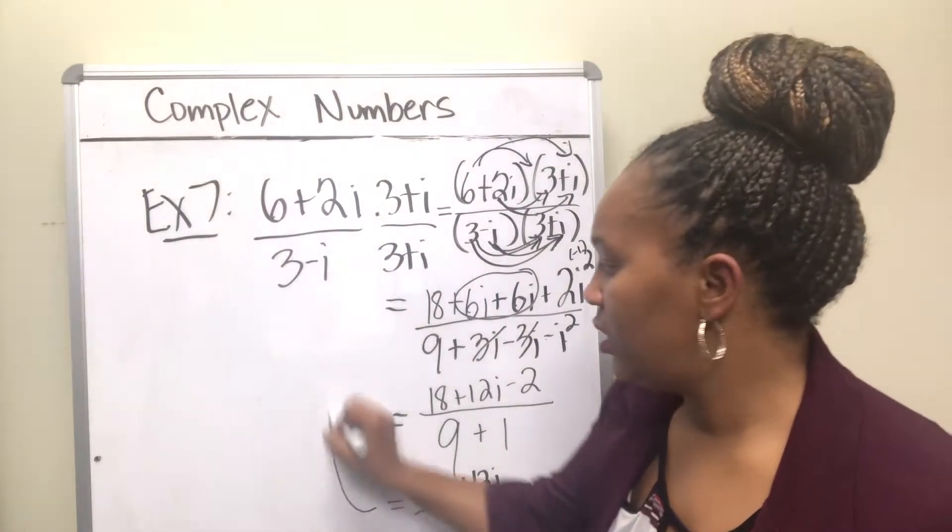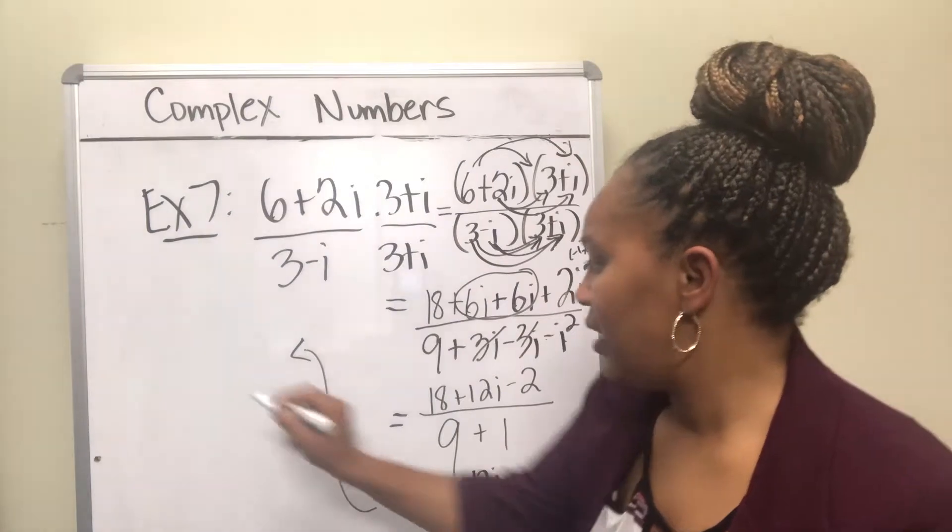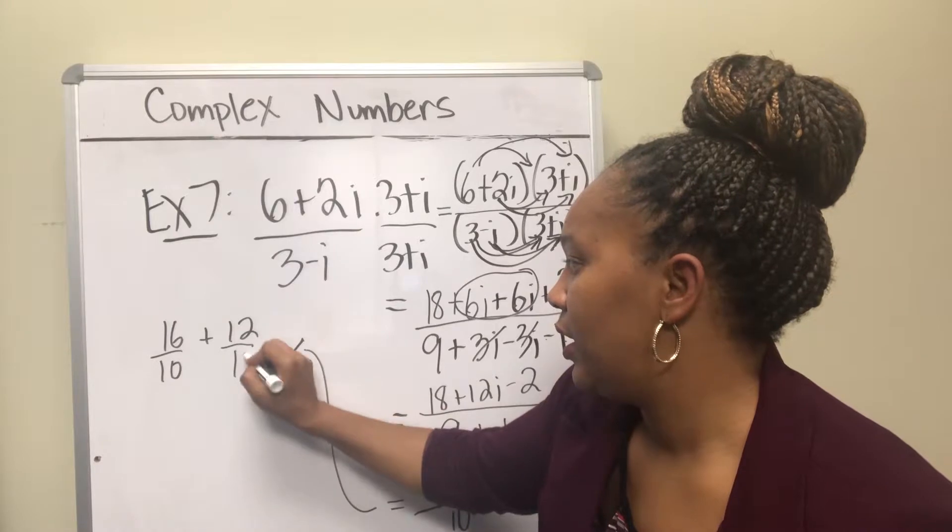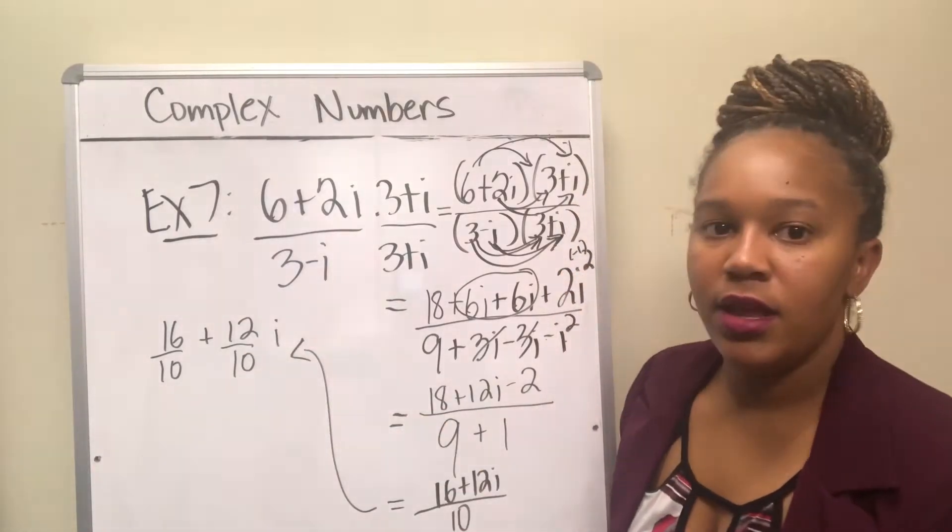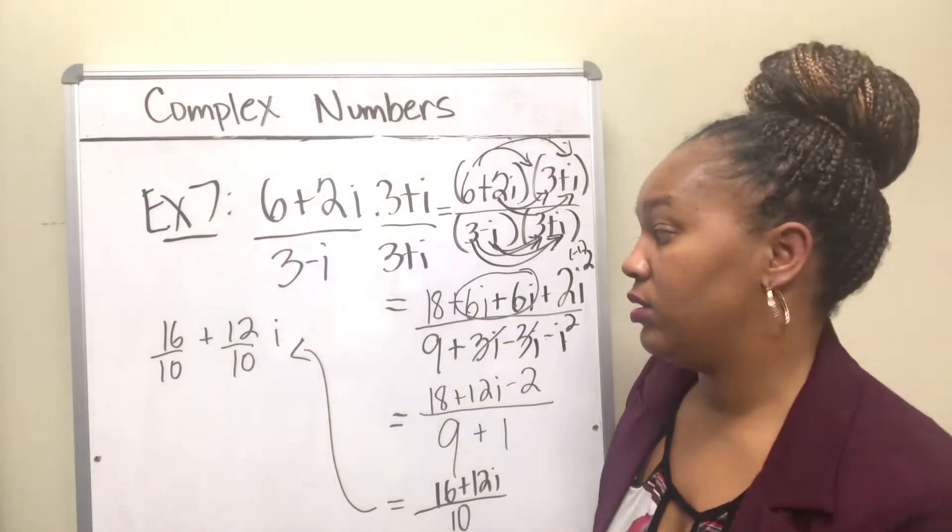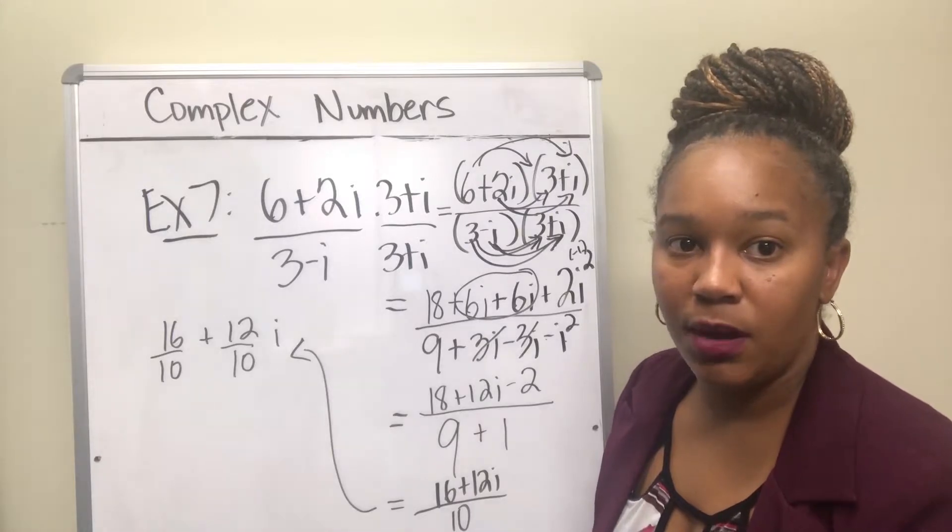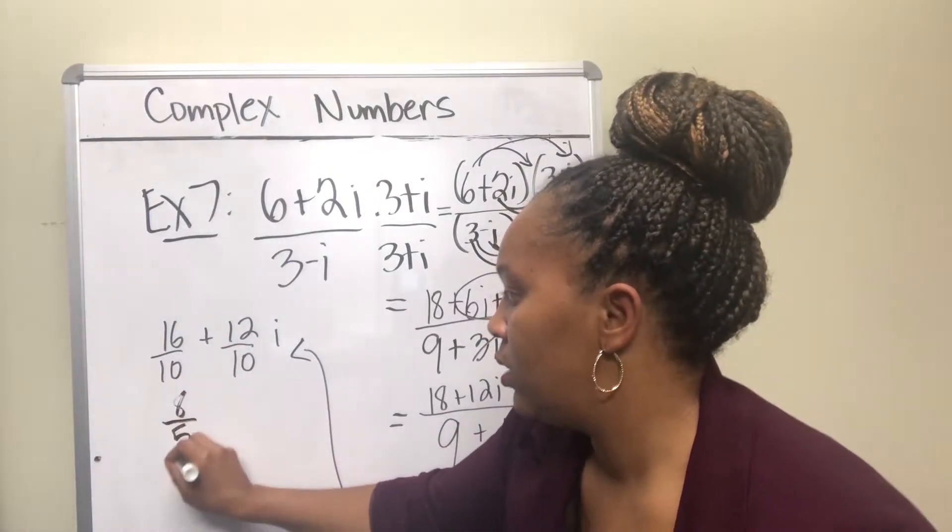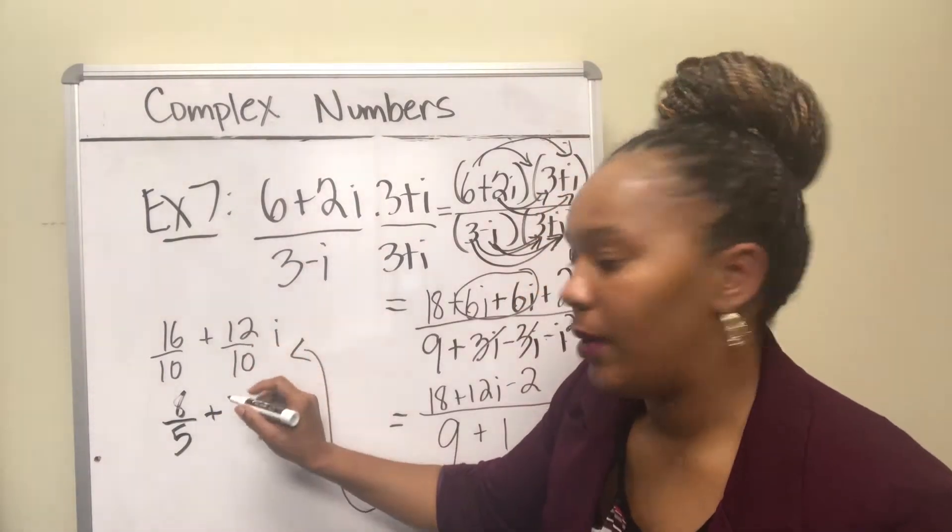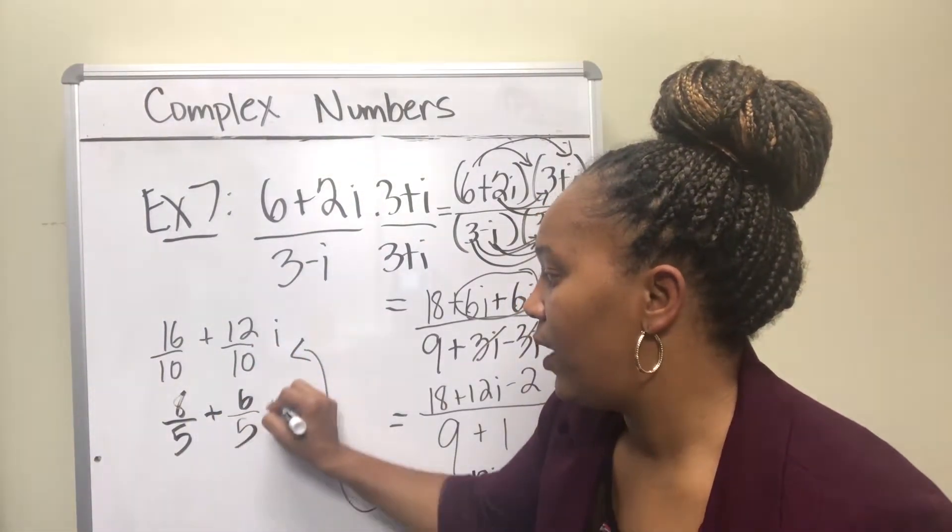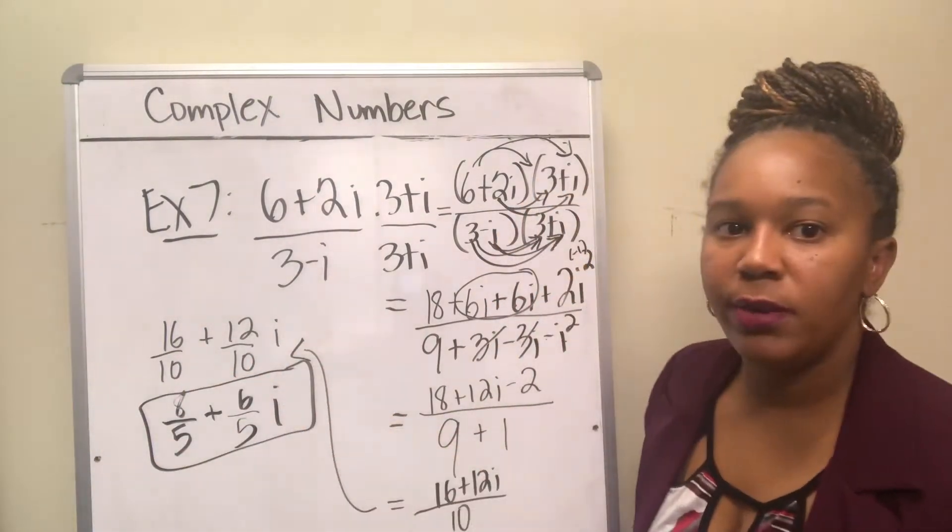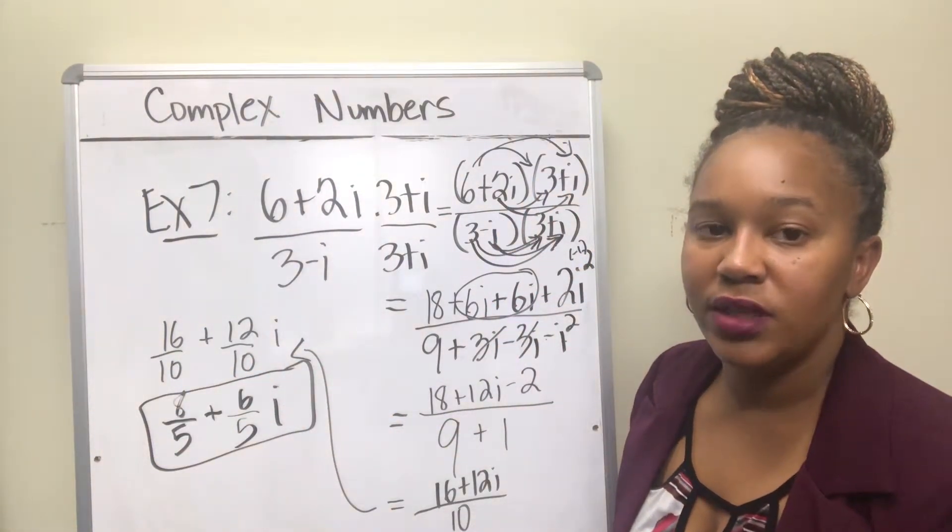That simplifies to 16 over 10 plus 12 over 10 i. And since all of those numbers actually are even, you can divide them all by 2. So 16 divided by 2 is 8. 12 divided by 2 is 6. 10 divided by 2 is 5, i. So your final answer in complex form will be 8 fifths plus 6 fifths i.